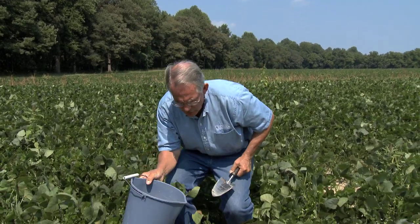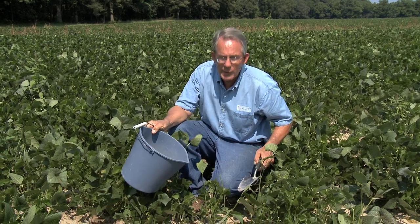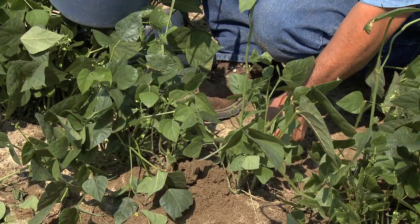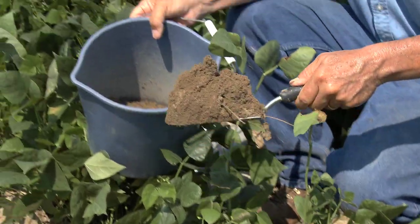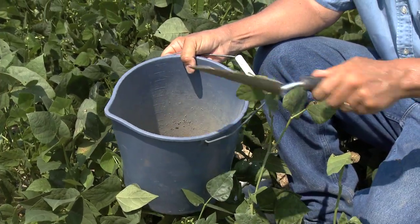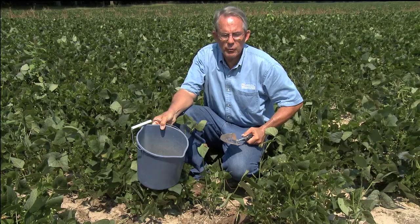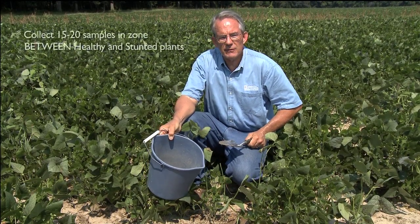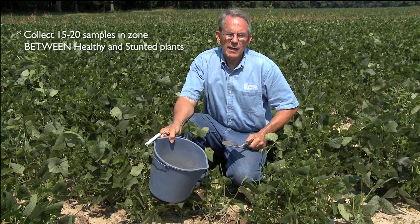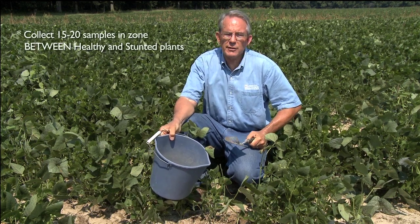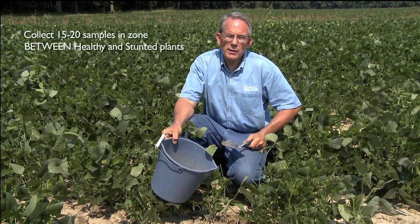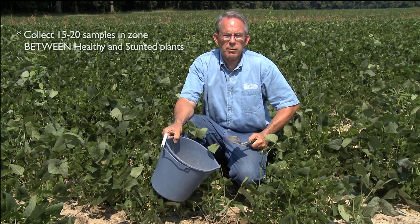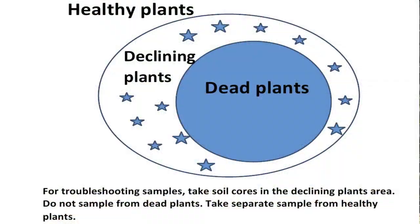Just like we do with the survey samples, we would want to sample the soil right between the plants in the row, going down about four to six inches, removing a small amount of soil with a spade or a soil probe. You'd want to do that in 15 to 20 places in the area where you're seeing the stunting in the field. It's important to sample that zone between where the plants are poor and where they look normal.